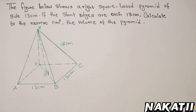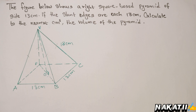Hello, welcome back. The figure below shows a right square-based pyramid of side 13 centimeters. If the slant edges are each 18 centimeters, calculate to the nearest centimeters cubed the volume of this pyramid.